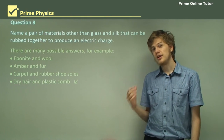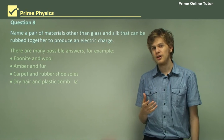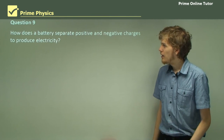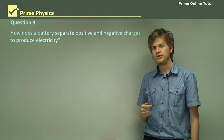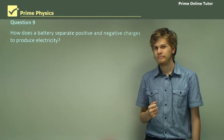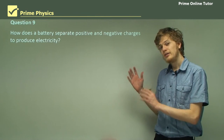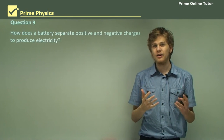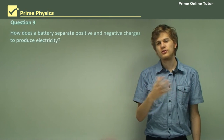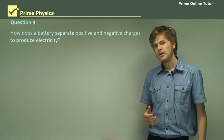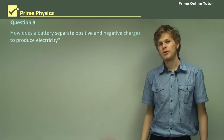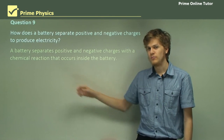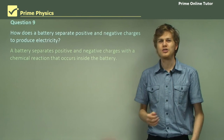Any spark produced by static electricity is a result of an unbalanced charge between two objects. Question 9: How does a battery separate positive and negative charges to produce electricity? A battery separates positive and negative charges with a chemical reaction that occurs inside the battery. We don't need to get any more complex than that unless we're doing chemistry. The reaction usually involves two different metals as well as a chemical called an electrolyte.